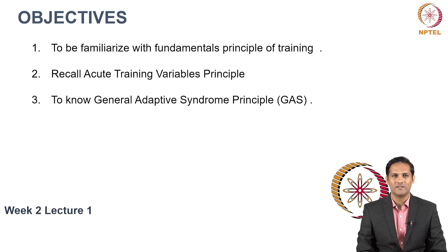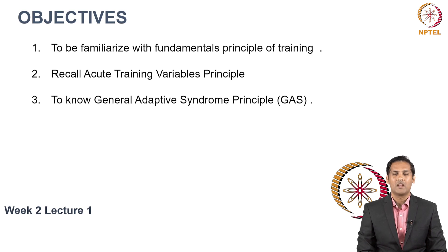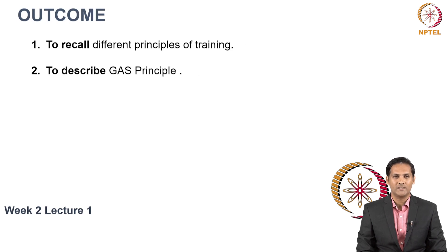The objective of Lecture 1 is to be familiarized with the fundamental principles of training — the very basic principles upon which you would be planning your entire program. The second objective is to recall Acute Training Variable Principles covered in week 1. The third objective is to know the General Adaptive Syndrome Principle. The outcome of Lecture 1 is to recall different principles of training and to describe the GAS Principle.